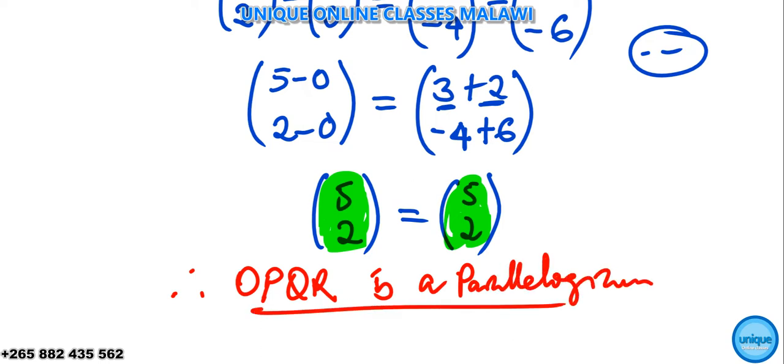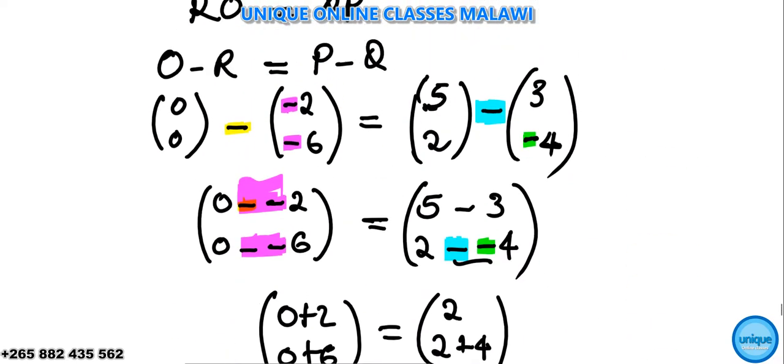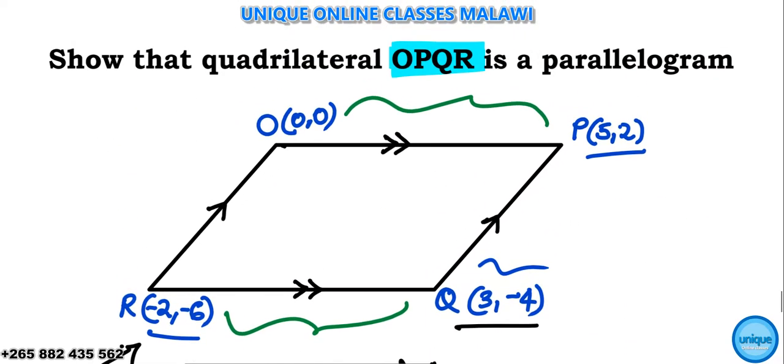So you can just choose one pair, you can use the horizontal lines or use the vertical lines, that's the same thing. Mind you, if you're watching this video, please don't forget to subscribe to my YouTube channel as well as liking my Facebook page Unique Online Classes Malawi. So using what we have done here, we can also be asked to find the missing coordinates of a parallelogram. So let's see the question.